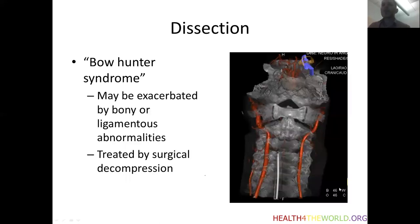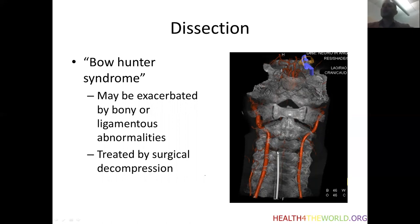This is sometimes called Bowhunter syndrome, after the posture adopted by bowhunters with the head turned to one side. What we suspect is that there is chronic dissection that may be initially provoked by trauma or may be spontaneous, and it's exacerbated or prevented from healing by bony or ligamentous abnormalities. In these cases, treatment with antithrombotics often fails, so children may present with recurrent strokes despite antithrombotic treatment, and we would then proceed to surgical decompression of the artery.